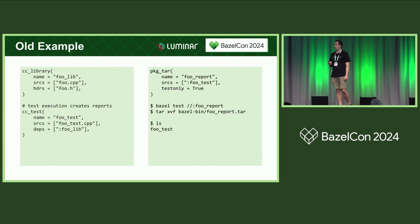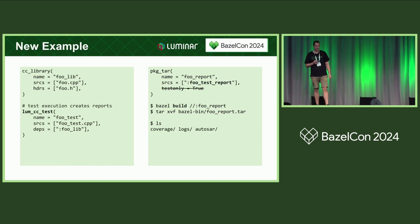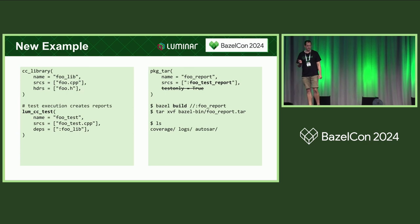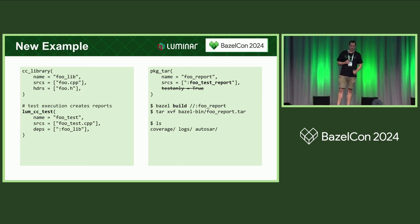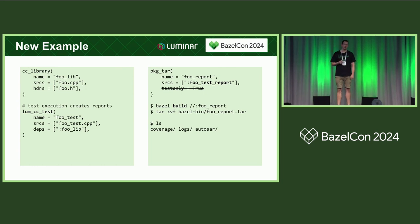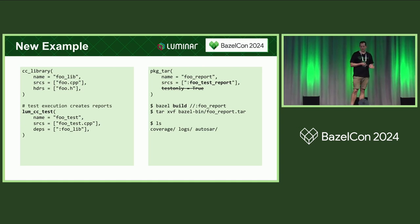Looking back at the example we started with — that's the old example — if we now look at the diff, we simply replace cctest with Loom cctest. And to generate the actual report in the package tar, I now take the report target defined by our custom rule, and calling Bazel build, I'm now able to properly generate my tar output that contains all the reports I wanted to have.